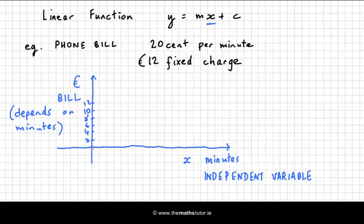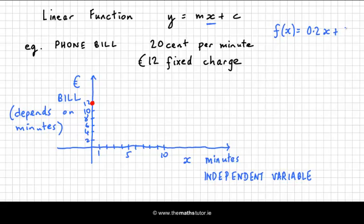When the number of minutes is 0 we still have to pay 12 euros. When the number of minutes is 1, we pay 12 euros and 20 cents. What about when we spend 10 minutes on the phone — what would our bill be for that month? We can rewrite our function as f(x) equals 0.2 times x plus 12. So f(10) is 0.2 times 10 plus 12, which is 2 plus 12, which is 14. So when we spend 10 minutes on the phone, our bill is 14 euros.